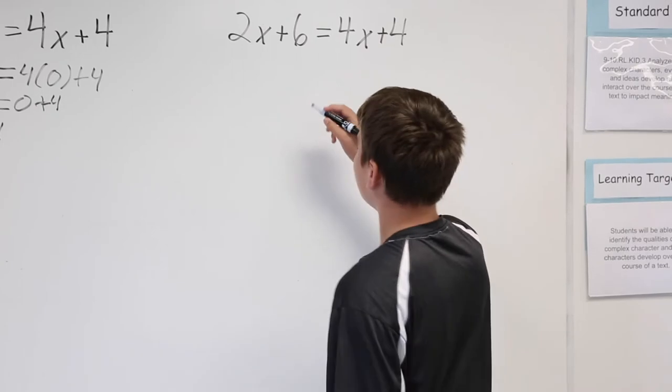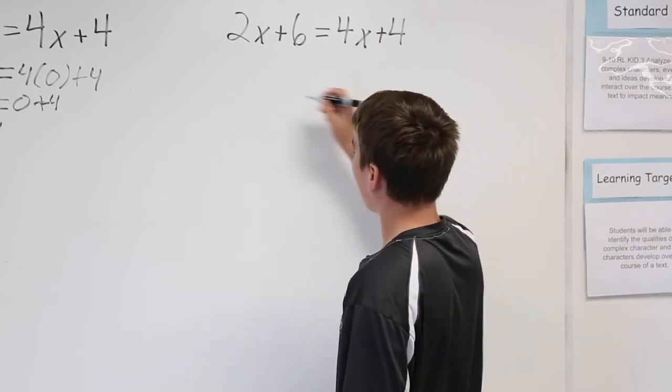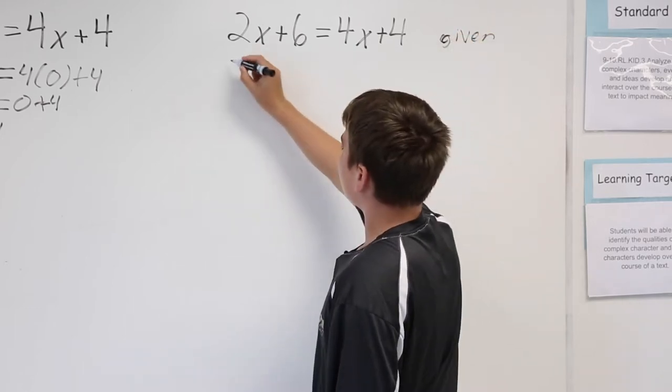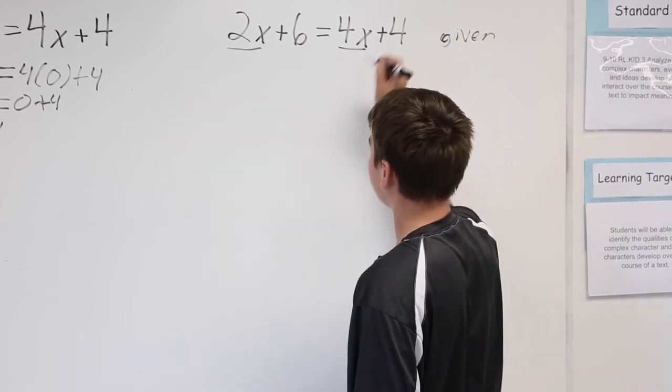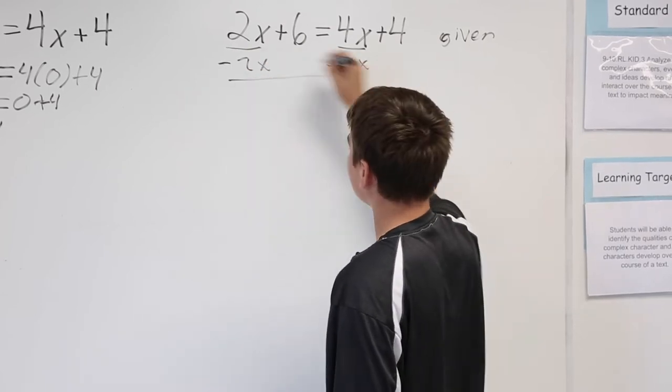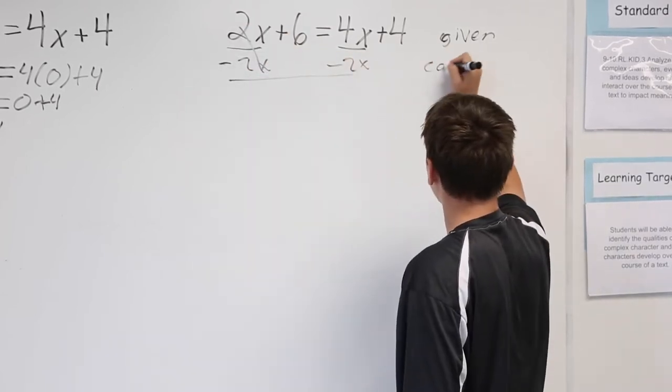This is the correct way where you would have to solve. So this is the given, and right here we have two of the same. So you would subtract the lowest, which is combined like terms.